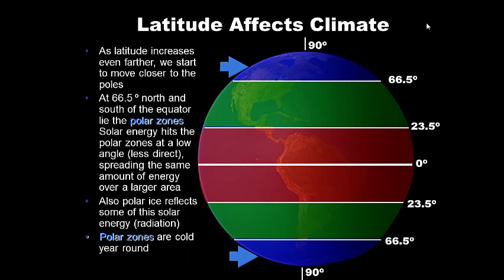Moving even farther from the equator, at 66.5 degrees north and south, we encounter the polar zones. Solar energy strikes the polar zones at a very low angle — about 30 degrees — so it's less direct and more spread out because the Earth is round. This creates very little heat from the sun, resulting in a very cold climate. The ice in polar zones also reflects solar energy back into space, so polar zones are cold year-round.